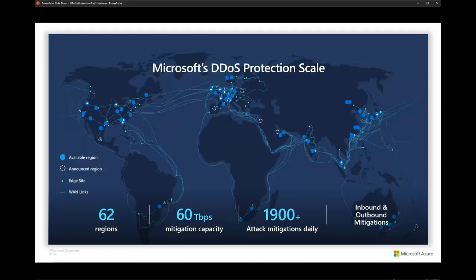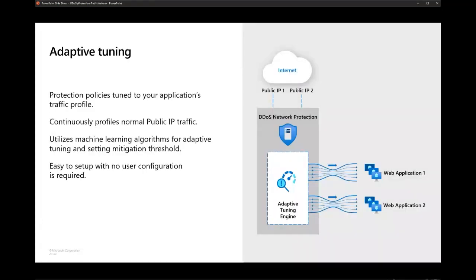Microsoft DDoS Protection is available in 62 regions with a mitigation capacity of 60 terabits per second. It mitigates around 1,900 attacks on a daily basis, covering both inbound and outbound traffic. The capacity is increased on a regular basis. Whether you have IP Protection or Network Protection, you get the same amount of protection from both. DDoS Protection uses adaptive tuning — it is not inline, meaning traffic is not checked for DDoS attacks until a specific threshold set by the adaptive tuning policies is reached.